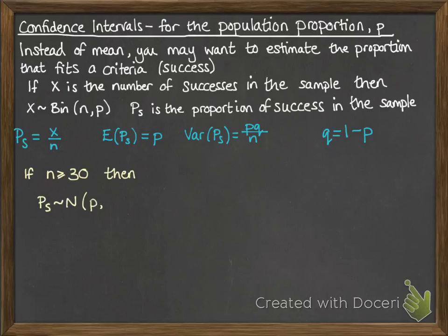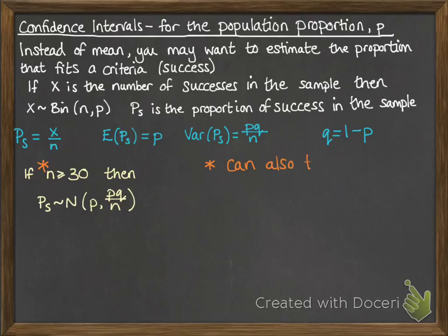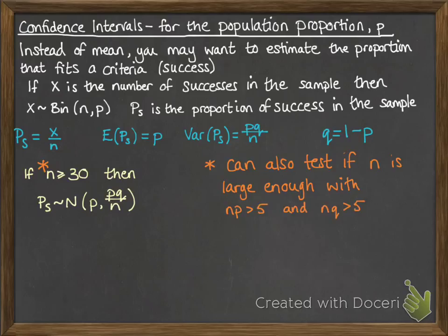If we have N large enough, we can make the following approximation where PS — the proportion of successes in our sample — follows a normal distribution. The same way as before you've approximated a binomial to a normal, it's similar to that. So we're using our mean of P, and the variance is PQ over N, as we just saw on that blue line above. There's another way of checking if N is large enough — you've seen this before when approximating binomial to normal — and it's to check that NP and NQ are both bigger than 5.